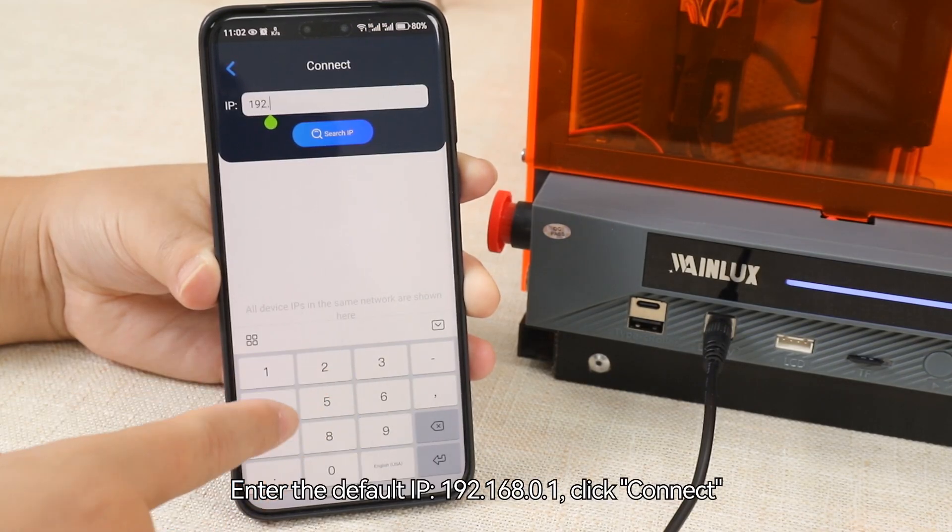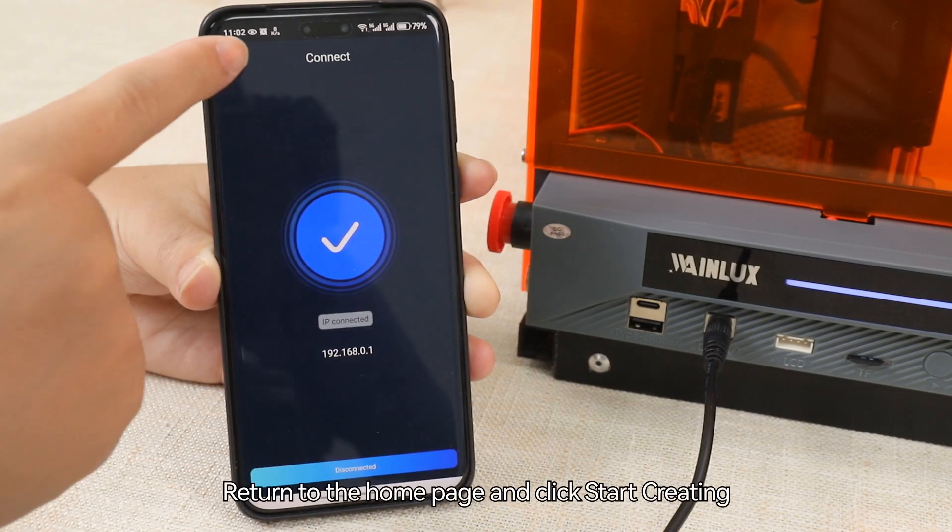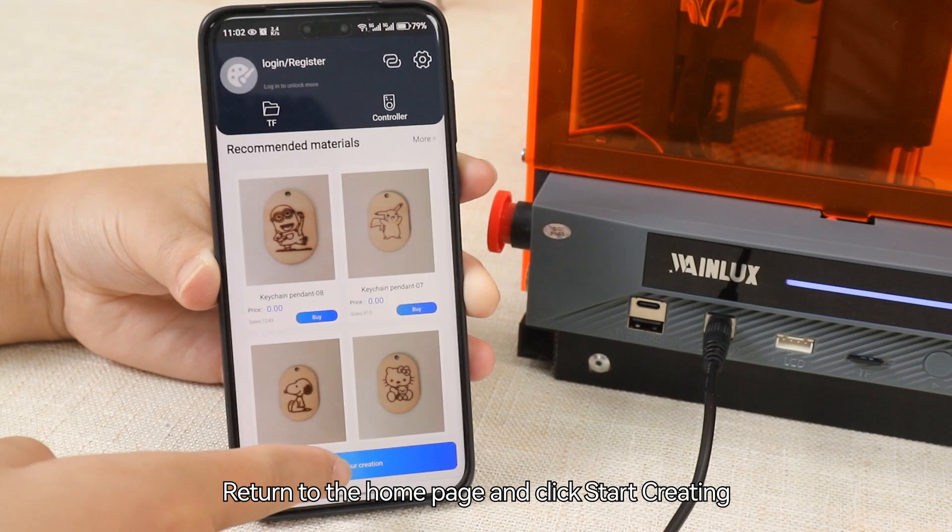Enter the default IP 192.168.0.1, click connect, return to the home page and click start creating.